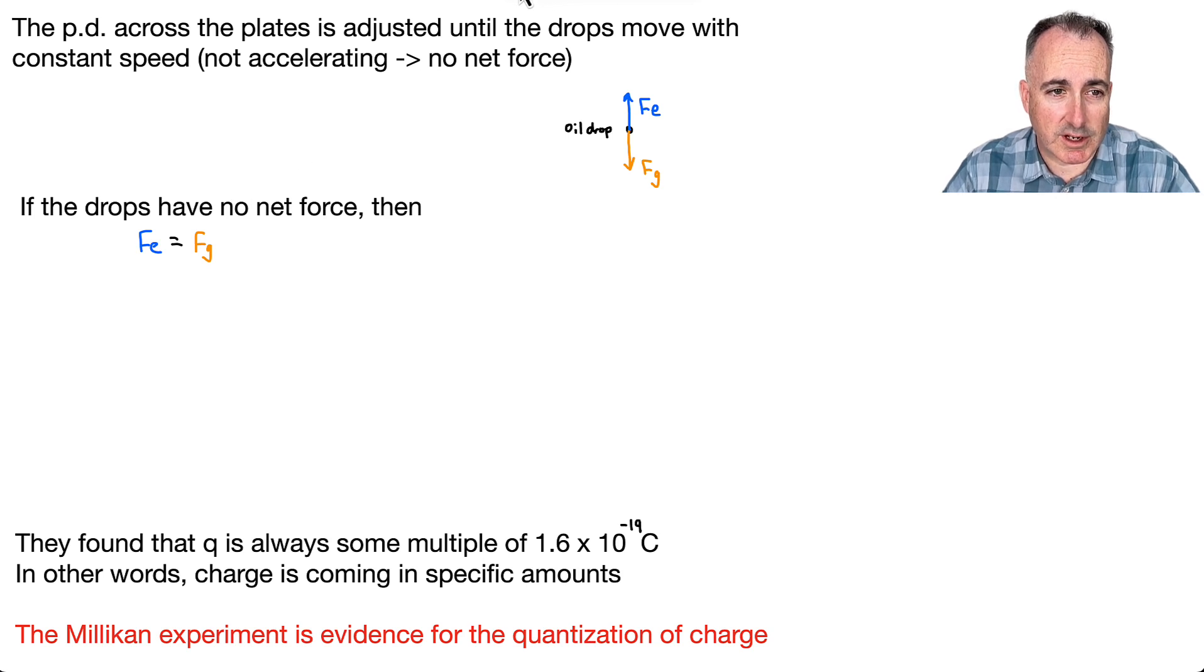This is going to be the key thing because now we can actually go ahead and calculate what's going on here. Now, we have this equation here for F_G. F_G is actually pretty easy. That one right there is just M times G, mass times acceleration.